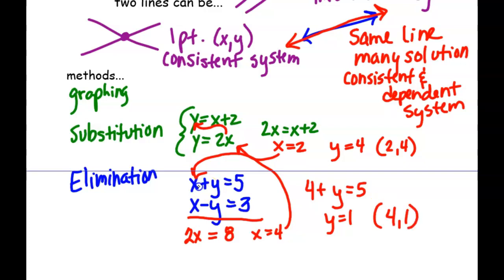It should work in both equations: 4 plus 1 is 5, and 4 minus 1 is 3. Elimination does get more complicated where you have to multiply through by something to make one of the variables drop out.